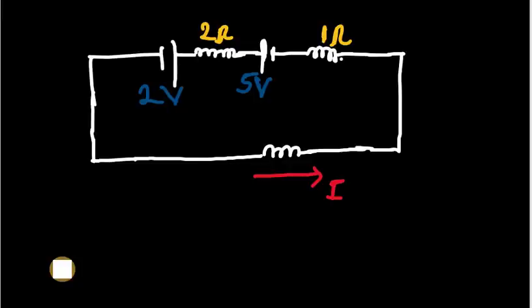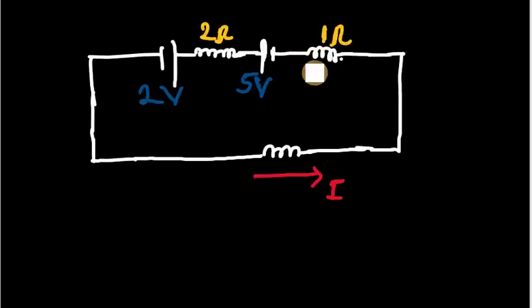Good morning and welcome to this class. In today's tutorial video we shall be looking at Kirchhoff's laws — specifically Kirchhoff's current law and Kirchhoff's voltage law. We have been making use of it to solve a problem where we have two sources of EMF: two volts and five volts. It becomes challenging when we want to find the current that flows through this circuit.